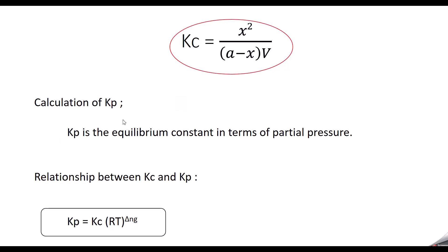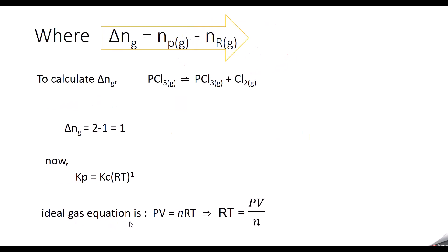To calculate Kp, the equilibrium constant in terms of partial pressure, we need the relationship between Kc and Kp. As derived in the first video, Kp equals Kc times RT to the power of delta Ng, where delta Ng is the number of stoichiometric moles of gaseous products minus the number of stoichiometric moles of gaseous reactants. For this equation, delta Ng equals 2 (products: PCl3 and Cl2) minus 1 (reactant: PCl5), giving delta Ng equal to 1.